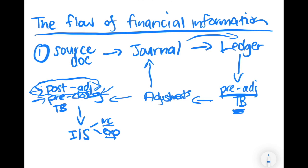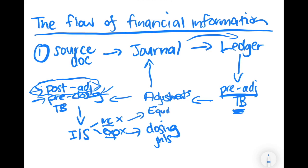Now that we have prepared our income statement, the next step is to process our closing journal entries. Our closing journal entries are going to close off the income and the expenses to the various equity reserves. We also close off things like drawings, which get closed off to retained earnings. The idea is that certain accounts will not appear on our statement of financial position, so we close those off to the relevant equity reserves.